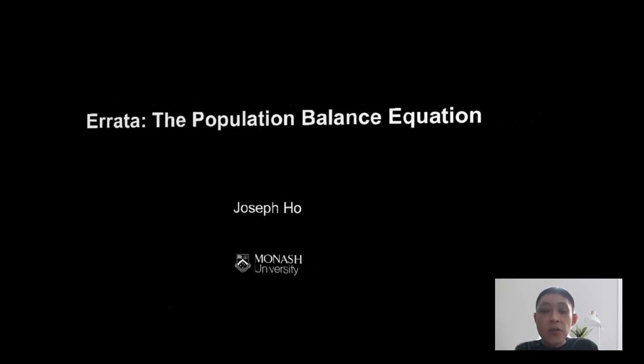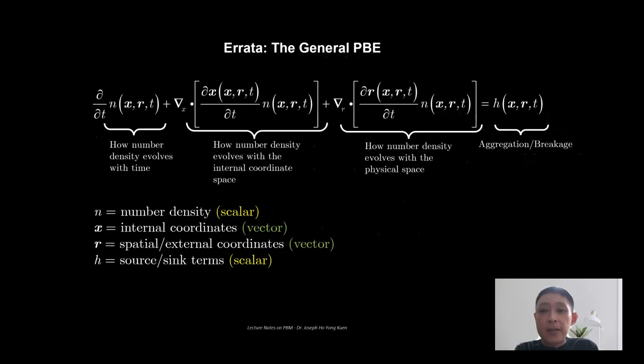In the last two videos that I posted, I showed this particular general population balance equation. But in this general population balance equation there is a misrepresentation here, in the sense that these terms here should not be written as such. The terms relating to the velocity of the internal coordinates and the velocity through the external coordinate space should not be written as these two partial derivatives. I'll explain in the next slide why this is so.